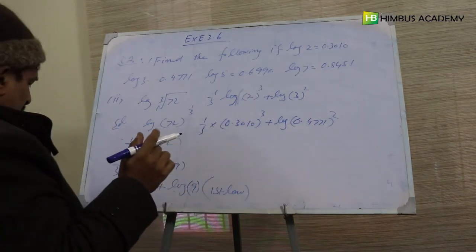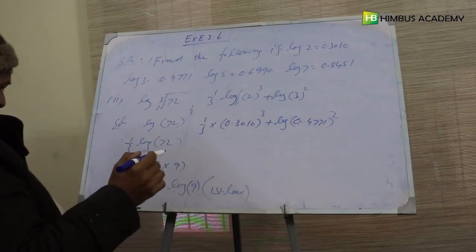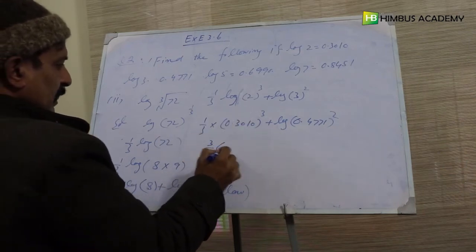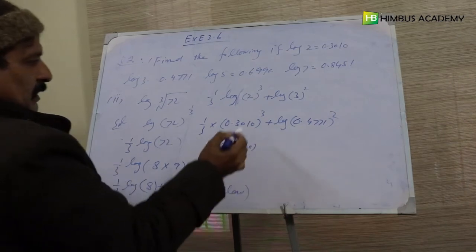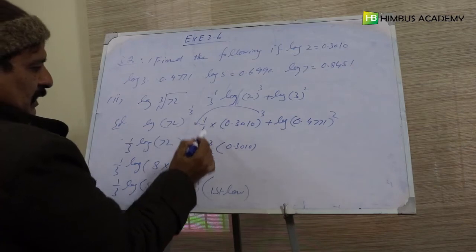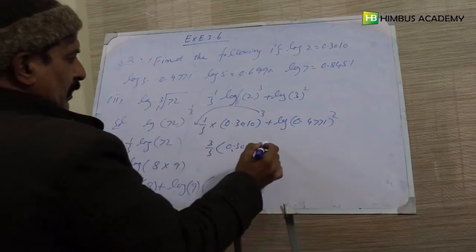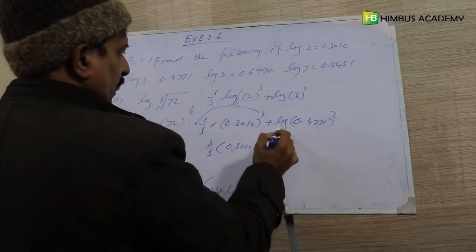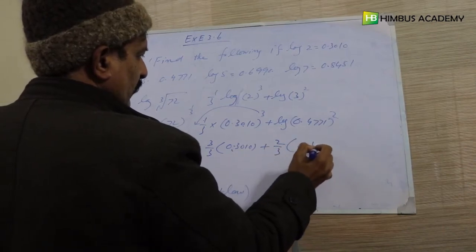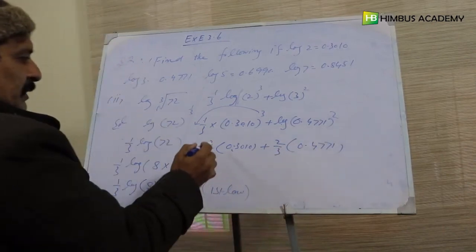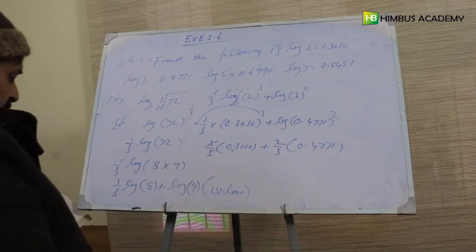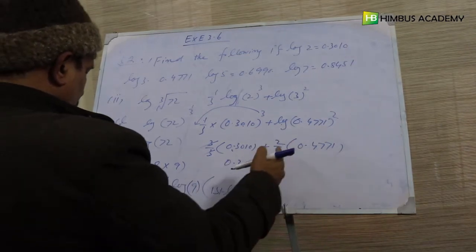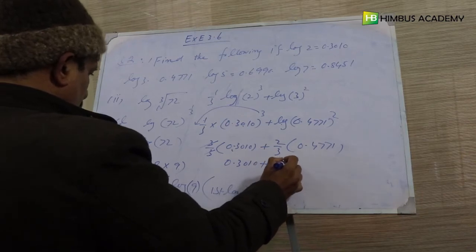ان سب کا multiplication کریں: یہ 3 نیچے آئے گا تو 3/3 cancel ہو کر 1 آتا ہے۔ So we get: 0.3010 plus — دو والا two اور three ہو جائے گا — 0.4771 × 2/3۔ Three divide by three cancel ہو جاتا ہے۔ So: 0.3010 plus 0.3180۔